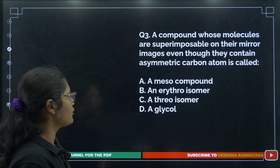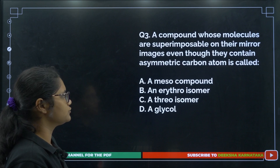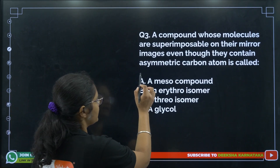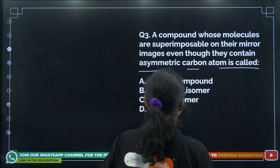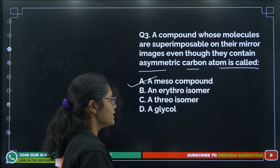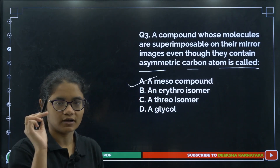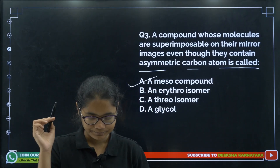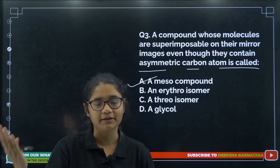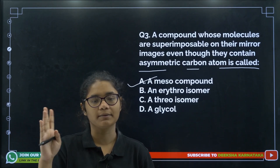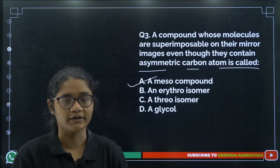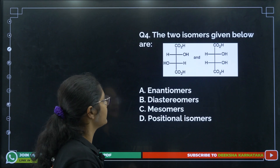Question 3: A compound whose molecules are superimposable on their mirror images even though they contain an asymmetric carbon atom is called a meso compound. Meso compounds have chiral centers but their mirror images are superimposable on each other, so they are optically inactive.